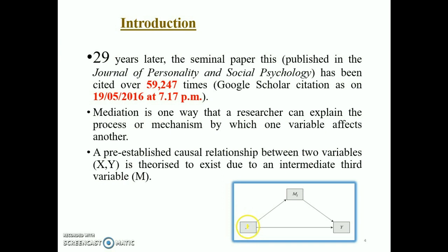For example, let us assume X could be considered as job autonomy, Y could be considered as organizational commitment, and M could be considered as job satisfaction. Here I am hypothesizing how job autonomy is affecting organizational commitment through job satisfaction. The role of job satisfaction is transmitting the effect from job autonomy on organizational commitment — that is the role of job satisfaction in this simple mediation model.